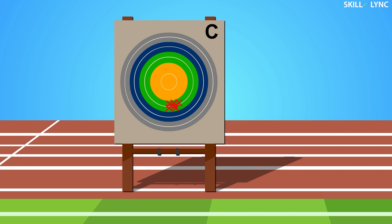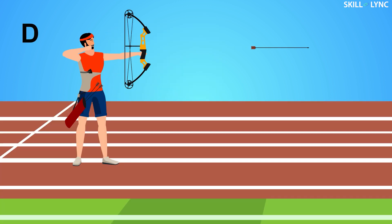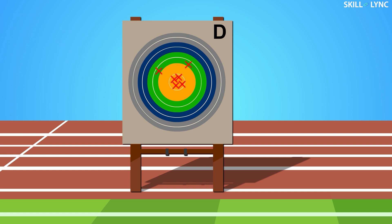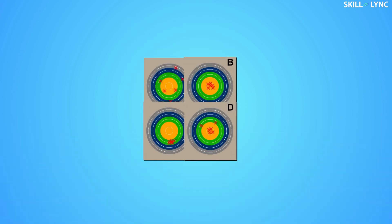Next up, it was person D. D was also a very capable archer, but D did not have the experience of B and C. Even though most of his shots were near the bullseye, he missed a few. This concluded one round of the competition.